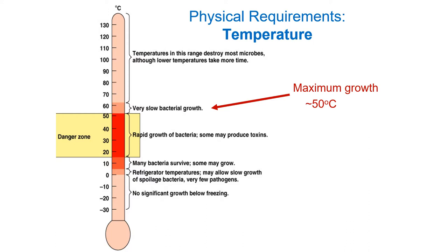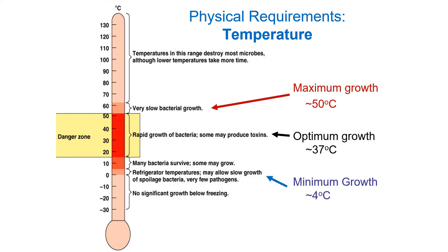Remember there are archaea — prokaryotes that are not bacteria but similar in many ways — that can survive very high temperatures, though fortunately they are not problematic. We have an optimum growth temperature of about 37 degrees, which coincidentally is the temperature of our bodies. For minimum growth, bacteria typically do not grow below 4 degrees Celsius. Lowering temperature below that may not kill them but will prevent division and shut down metabolism.